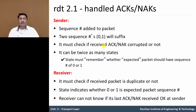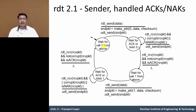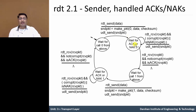Let us see how RDT 2.1 works by examining the FSM. On the sender side, the event is that data is received from the upper layer. A packet is created with the data and checksum field value. In this protocol we add one extra field — sequence number 0 — and then send that packet to the lower layer. In this state the sender waits for an acknowledgement or negative acknowledgement from the receiving side.